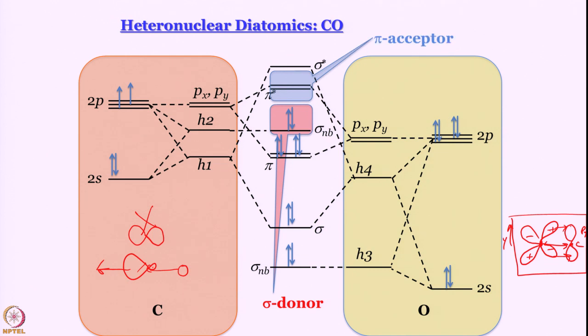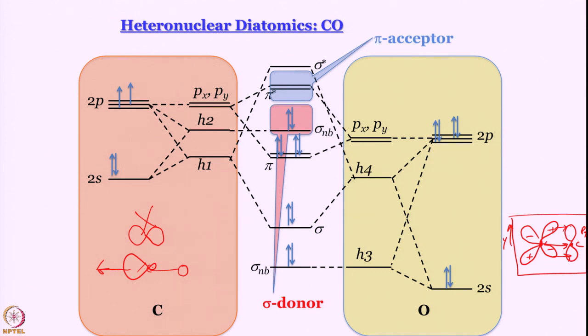In fact, if I show you the orbitals, this is what they are supposed to look like. This kind of an orbital makes CO a good sigma donor through the carbon atom. This kind of orbitals, remember they are also localized on carbon atom, makes carbon atom a good pi acceptor and that is how the synergistic effect takes place.